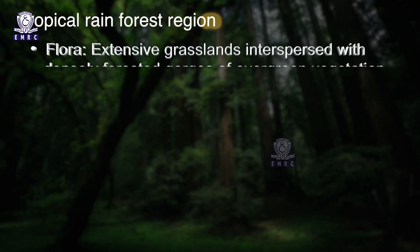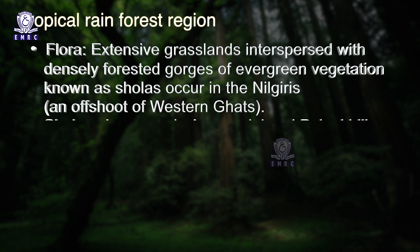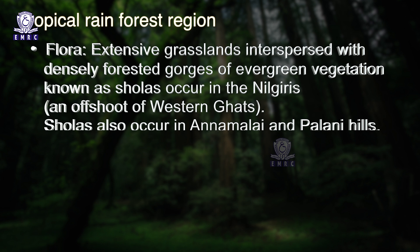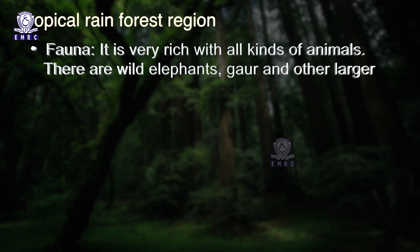The tropical rainforest region is distributed in the areas of the Western Ghats and northeastern India. Extensive grasslands interspersed with densely forested gorges of evergreen vegetation known as sholas occur in the Nilgiris, an offshoot of the Western Ghats, and also in Annamalai and the Palani hills. The rainforests of the Western Ghats have dense and lofty trees with much species diversity. Fauna is very rich, with wild elephants, gaur, and other large animals.